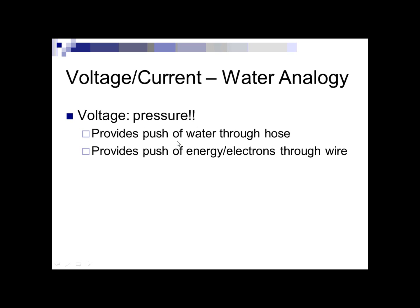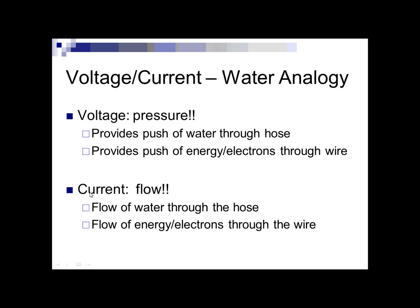The pressure versus the amount of water are different. Current is the flow — like a river current, it's how fast the water is moving. In the water analogy, the flow of water through the hose is current, just like the flow of energy or electrons through a wire. Voltage is the pressure, the push to have something happen. Current is the flow — how many electrons or how much energy is going through. This is why current can kill you, but voltage can't. Voltage is just the push; it's the actual flowing of electrons or energy through your body that can kill you.